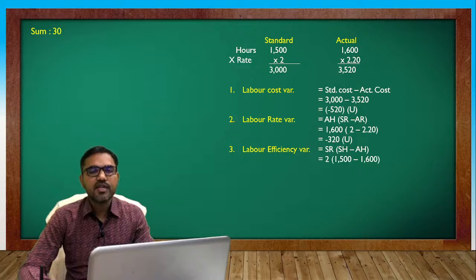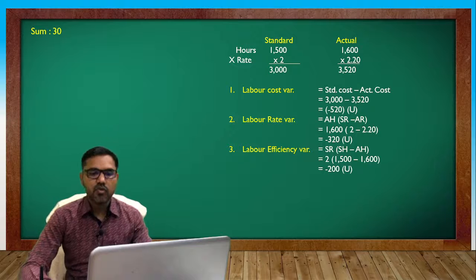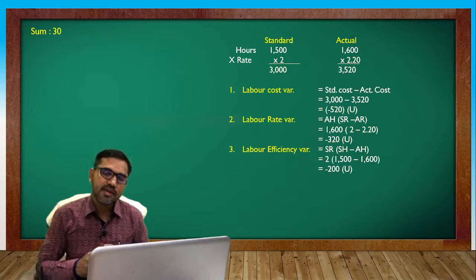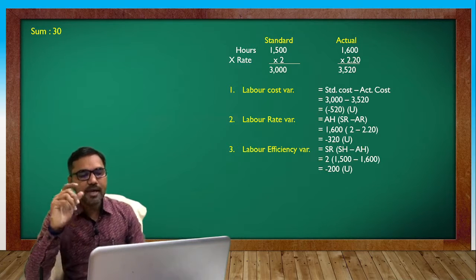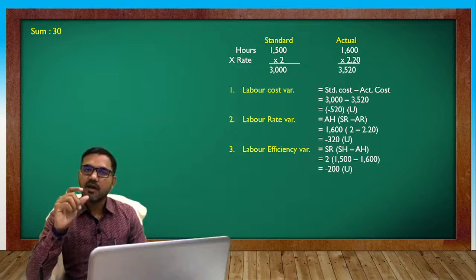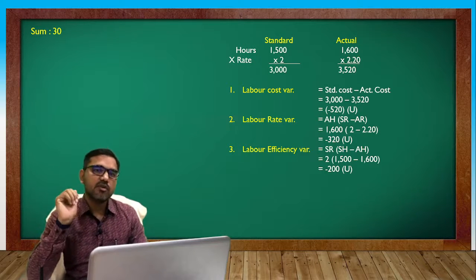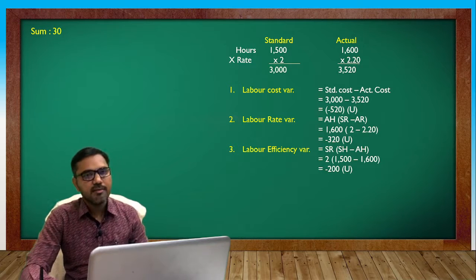2 into 1500 minus 1600, minus 200 unfavorable. Minus 200, minus 320, minus 520 for verification. So here we have one type of labor details complete - just formula and calculation, basic question on labor variances.